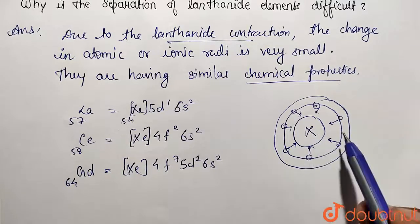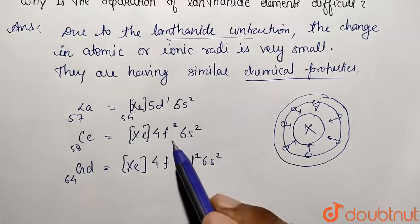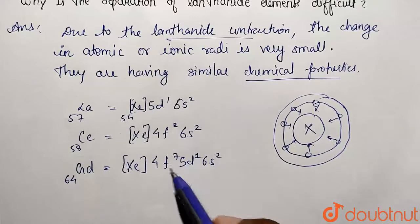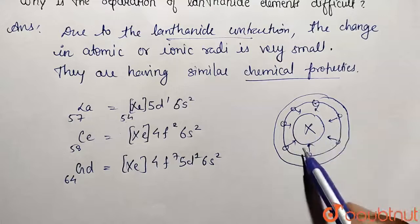And there is going to be less difference in the sizes of lanthanide series elements. Because we can see here the filling takes place in the f subshell. So more number of electrons are being added and shell number is going to be same.